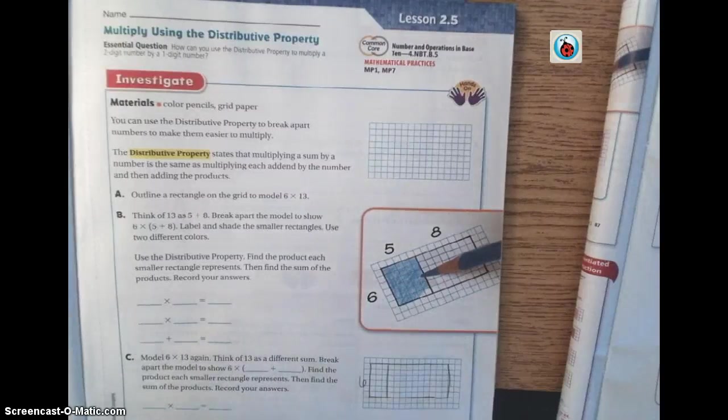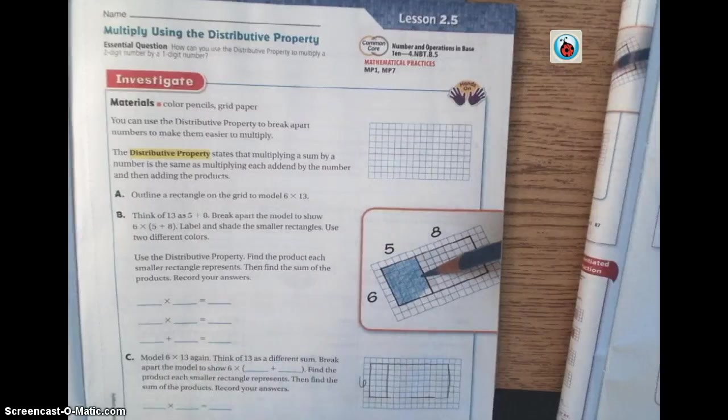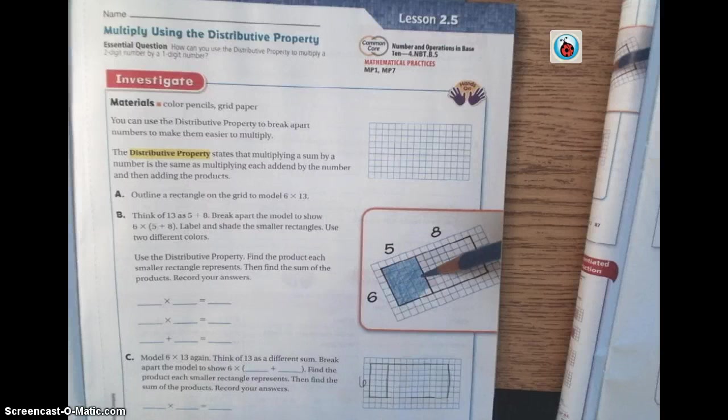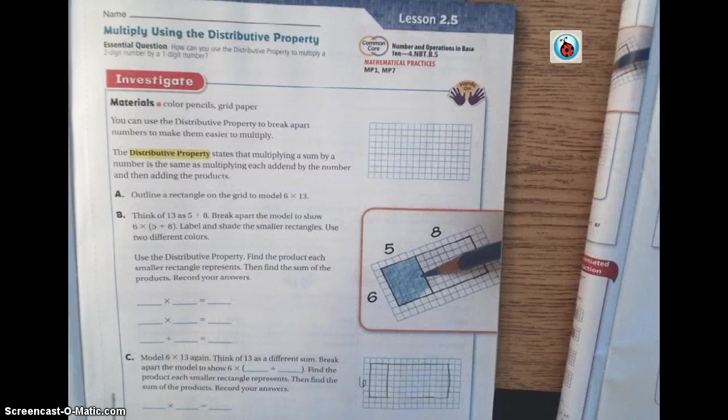You can see that your essential question is, how can you use the distributive property to multiply a two-digit number by a one-digit number? I have some special guests here with me. My class is here and they're following along with me, so if you hear me ask them a question, just follow along with us.